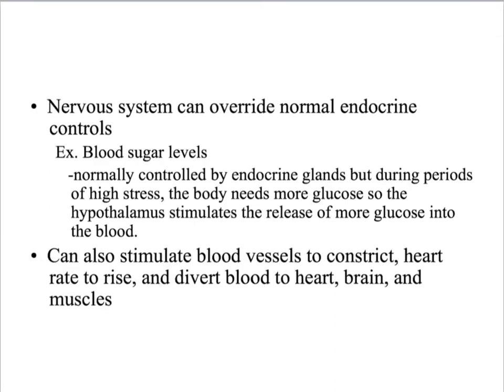The nervous system can override normal endocrine controls. For example, blood sugar levels are normally controlled by endocrine glands, but during periods of high stress the body needs more glucose, so the hypothalamus stimulates the release of more glucose into the blood. Think about a situation where you have a lot of adrenaline — maybe you have to run for your life. Your muscles, brain, lungs, and heart are going to need a lot more fuel, so the nervous system can override all normal endocrine function and stimulate the release of blood sugar.